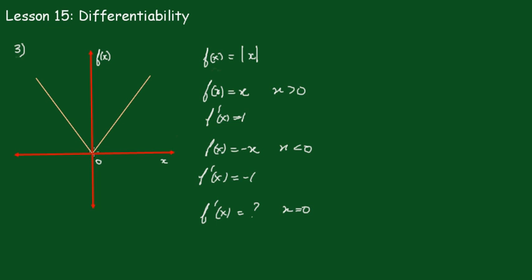But it is certainly continuous. So here we have a function which is certainly continuous all the way, but not differentiable at a particular point.